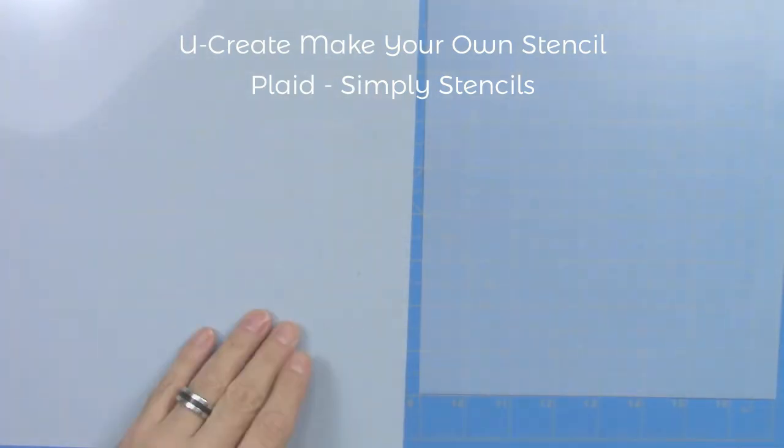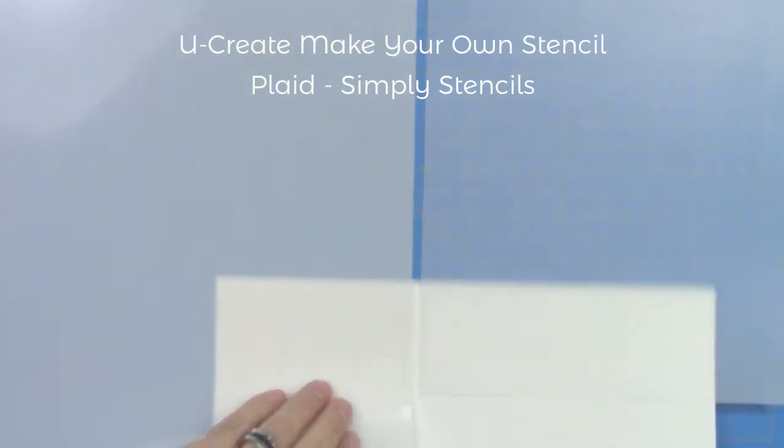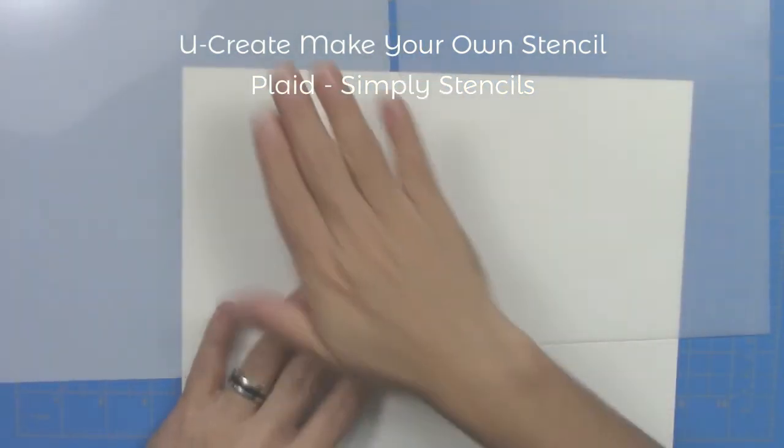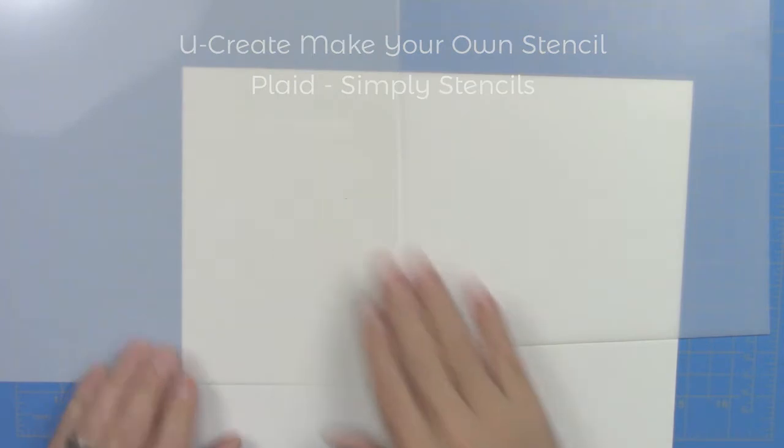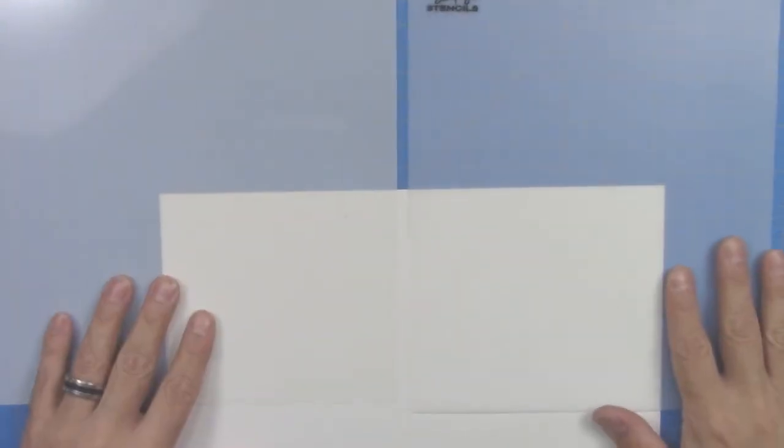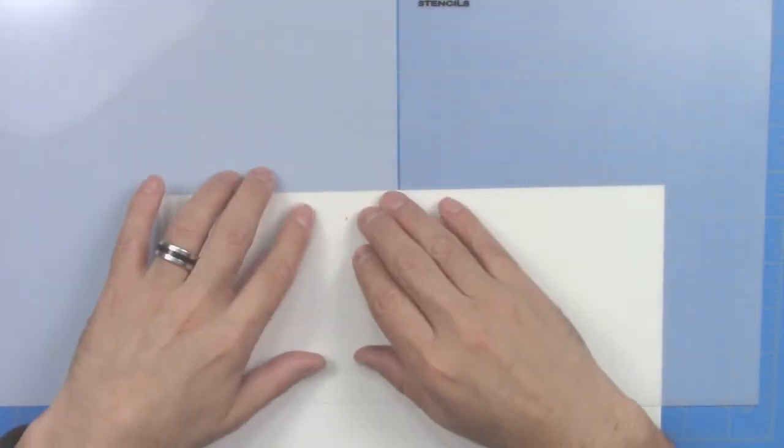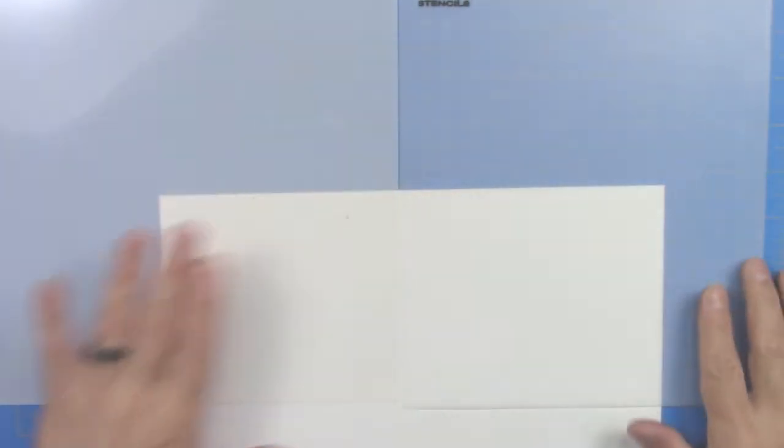Here you can see the transparency, the difference in the transparency of these materials. The Plaid brand that you see on the right is a little bit more transparent but they both have very good transparency and you can see where your stencil is at all times.